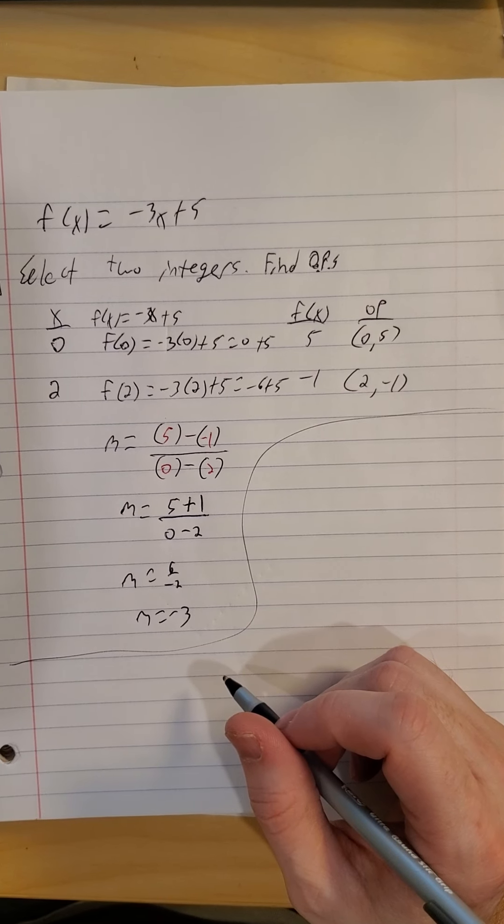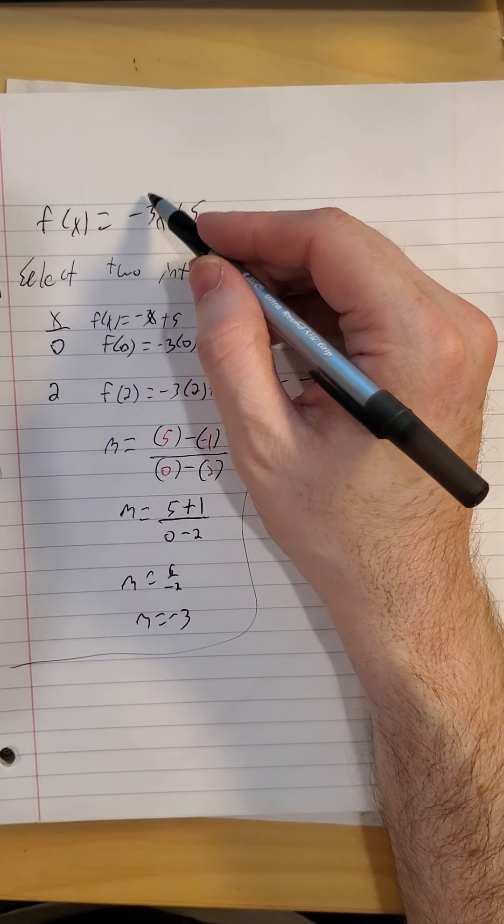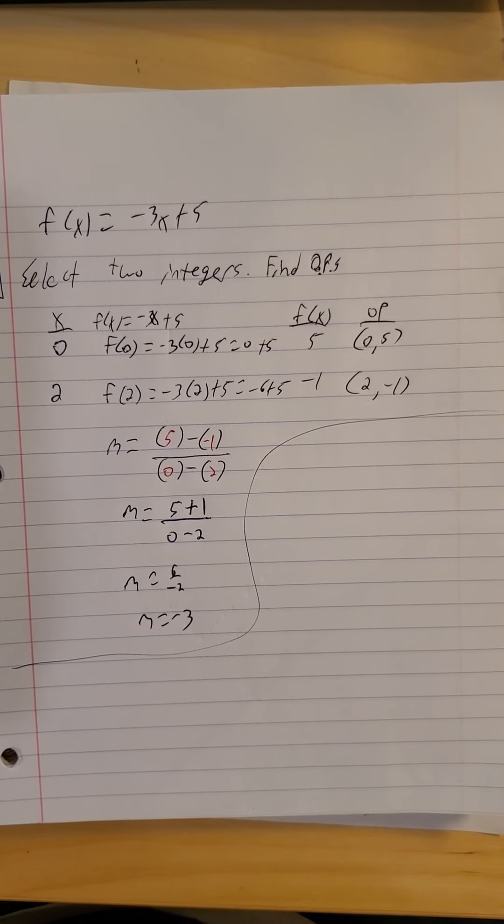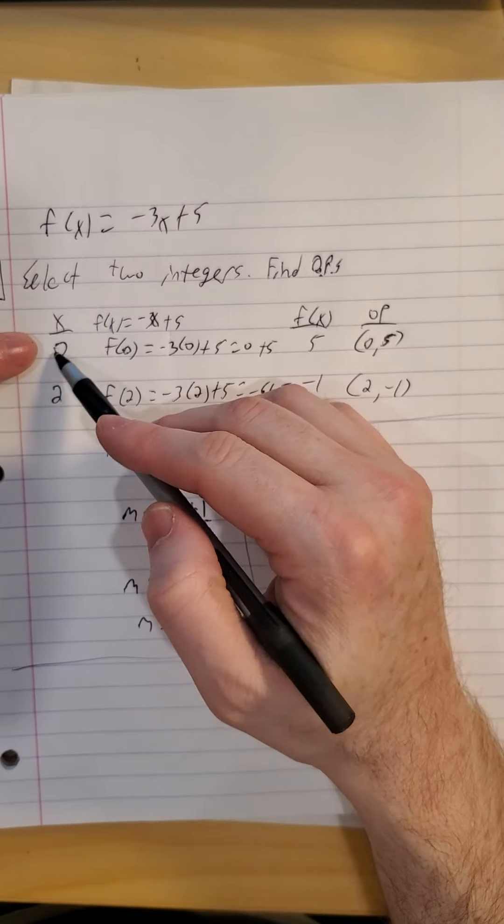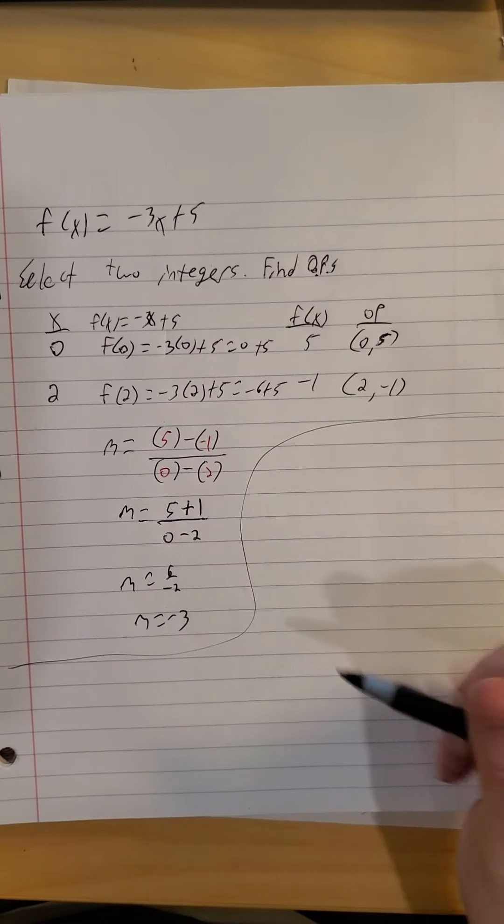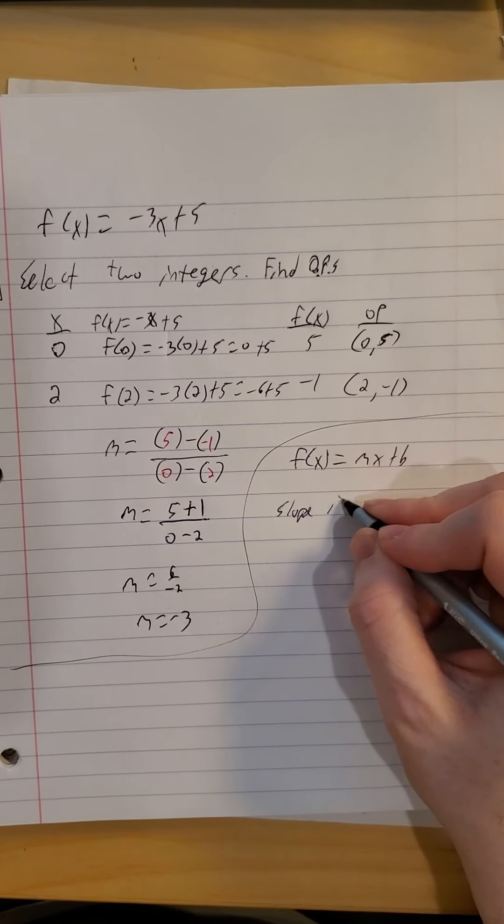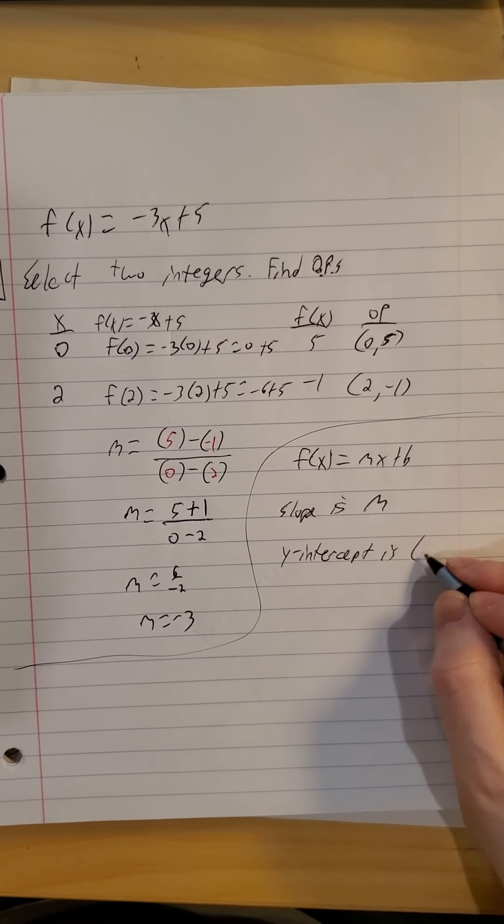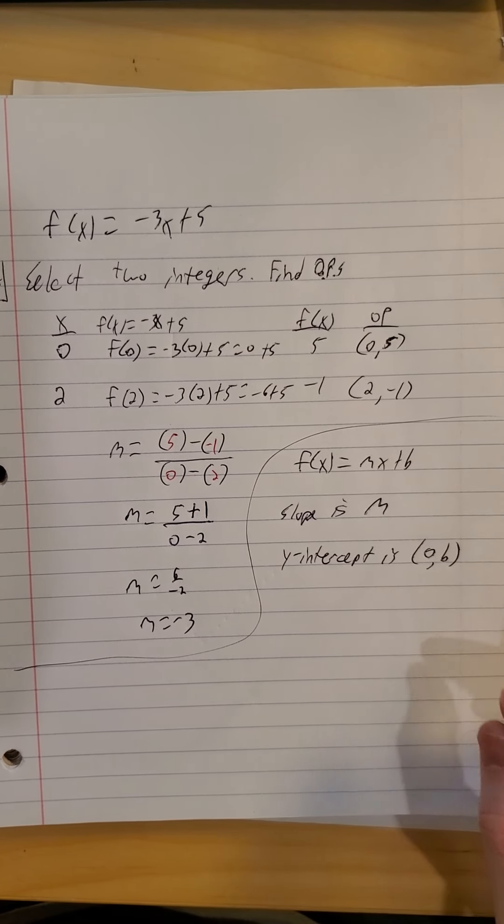Now you might have noticed the negative 3 appears in the problem right where we put the m when we're describing what the general functions look like. That is not a coincidence. That is the value you should get for a slope if you're in function notation. Also, you might notice that the 5 appeared in the problem as well. If our input is 0, no matter what we multiply 0 by, we'll get 0. 0 plus the number on the end here is always the number on the end here. So a couple of properties of f of x is mx plus b. Slope is m. Y-intercept is 0, b.